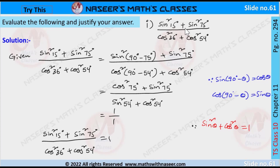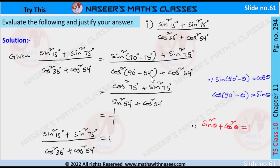To solve this one, 15 degrees is written as 90 minus 75 degrees, and 36 degrees is written as 90 minus 54 degrees.